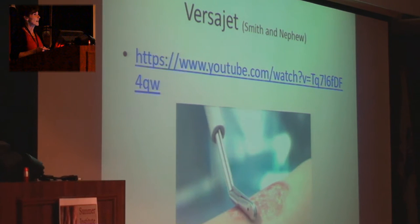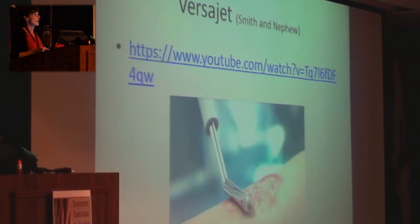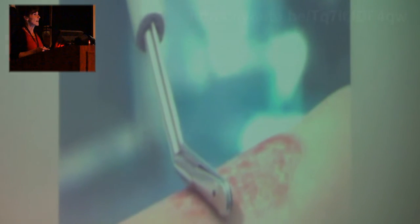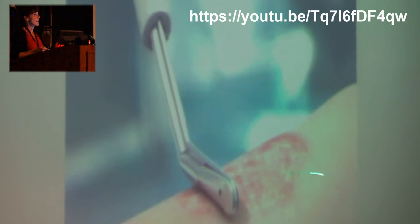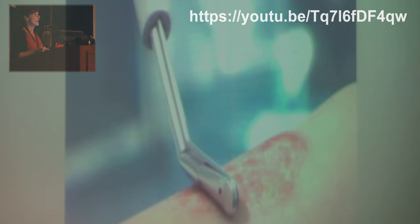The VersaJet — this is more of an FYI — there's a nice demo on YouTube. This is called hydrosurgical debridement: using a fairly high-stream jet of fluid, usually saline, that acts like a curette or razor to remove tissue from the wound bed. It's non-selective, generally well-tolerated, and can be a very nice adjunct. You'll see this more in wound care centers in the private sector rather than in the VA.